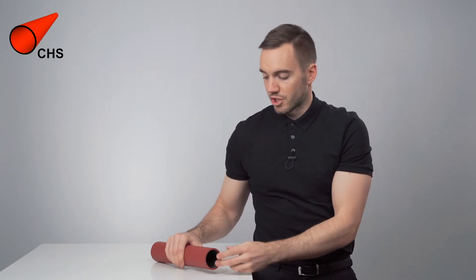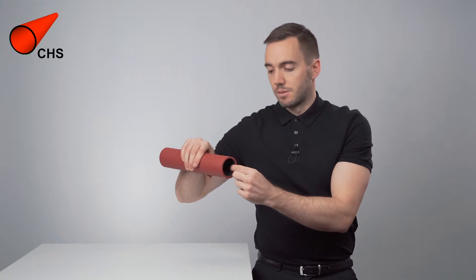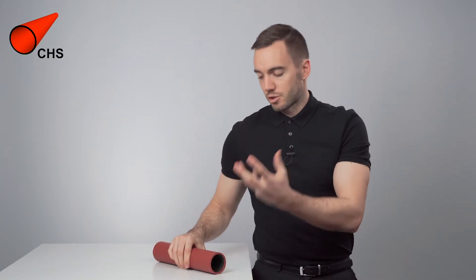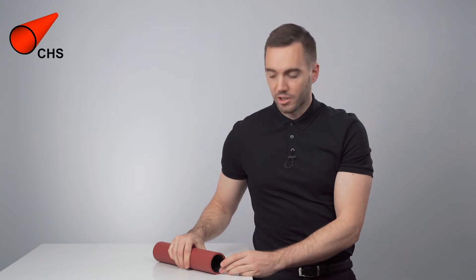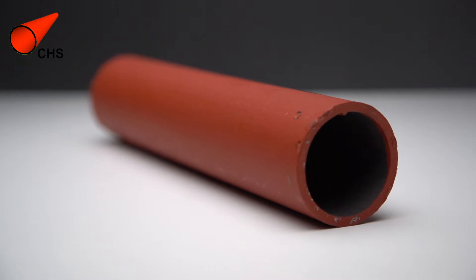And then welded along the length, and here you can see the bead. If it is hot formed, it comes out of the mill straight as a circular hollow section. CHSs are used predominantly for columns.